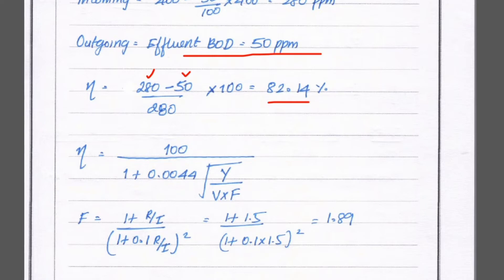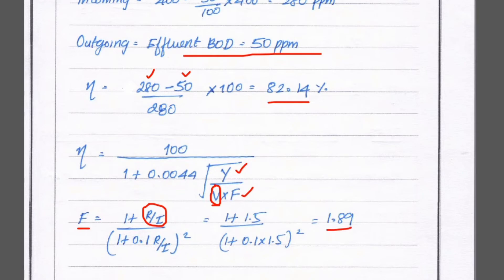The recirculation factor formula is: f = (1 + r/i) / (1 + 0.1 × r/i)². With r/i = 1.5, we get f = (1 + 1.5) / (1 + 0.1 × 1.5)² = 2.5 / (1.15)² = 2.5 / 1.3225 = 1.89. So the f value is 1.89.